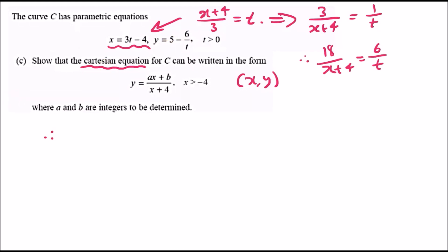Now let's plug this back into the y equation. We're going to have y equals 5 minus 18 over x plus 4. Now the key idea is just to get common denominator so everything's over x plus 4.